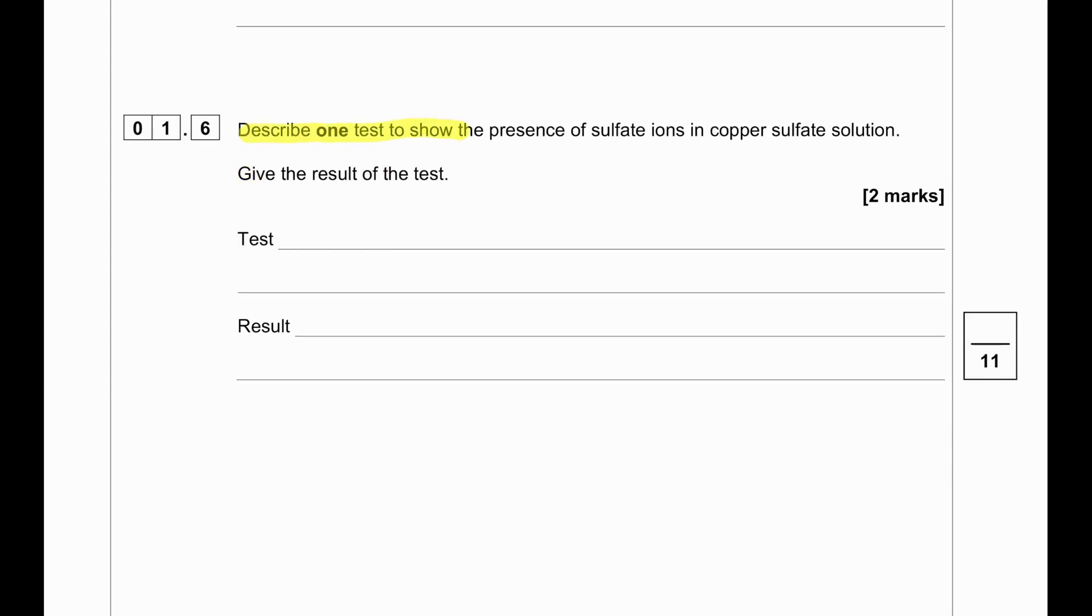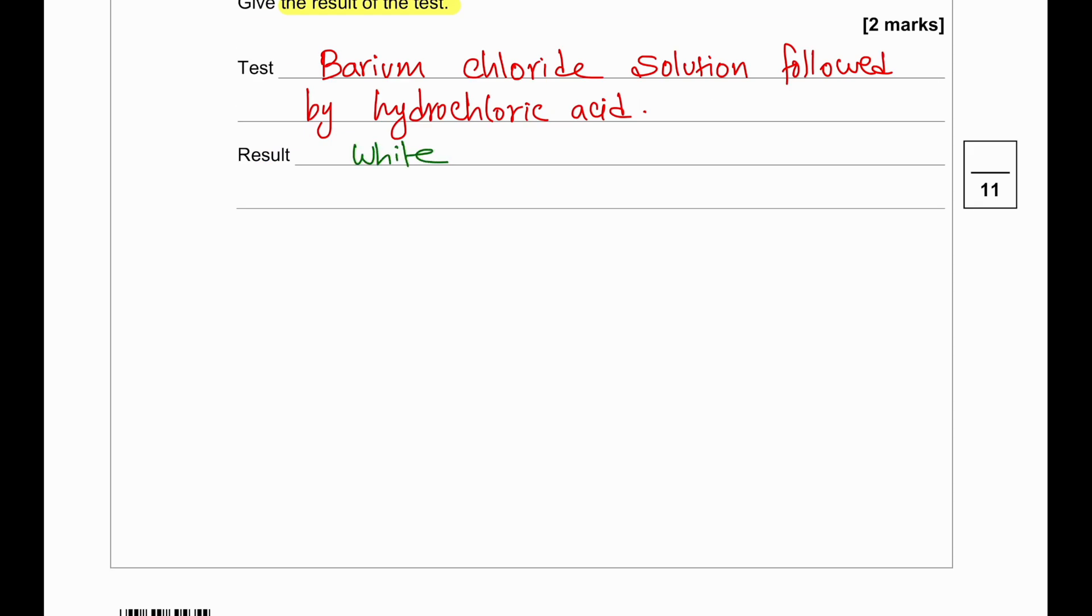Suggest one test. Describe one test to show the presence of sulfate ions in copper sulfate. Give the result of the test. For the test for sulfate ions, we can say we will add barium chloride solution followed by hydrochloric acid, and the result for the presence of sulfate ion will be indicated by a white precipitate.